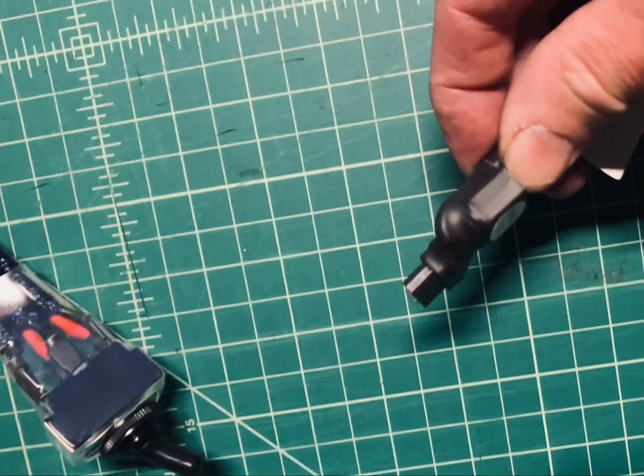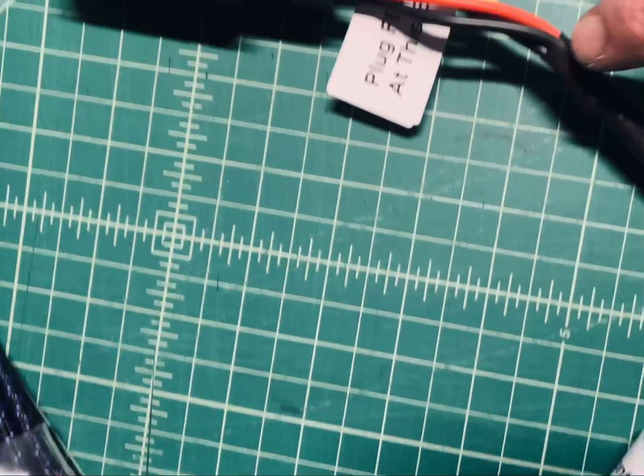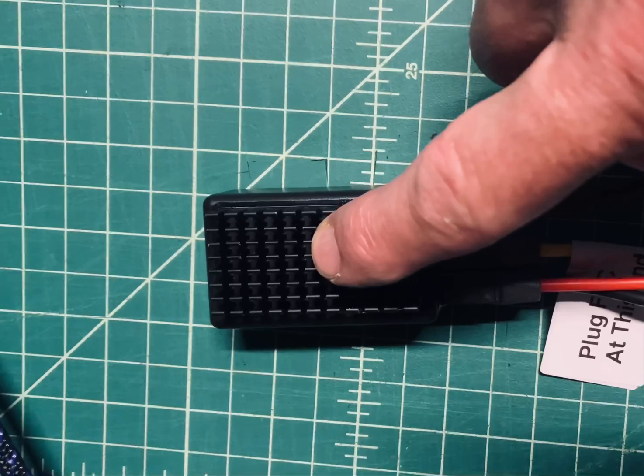The controller and OEM battery go to these double-sided connectors here. This short wiring harness goes to the FBC, which is the battery combiner.